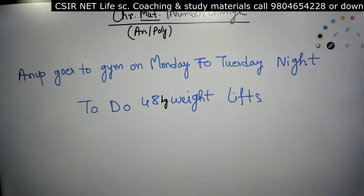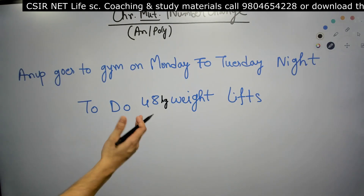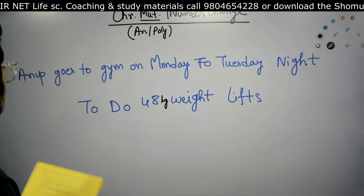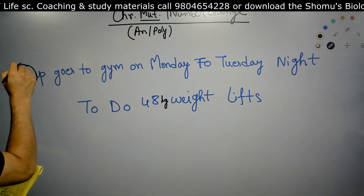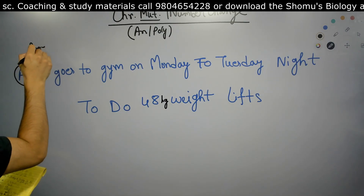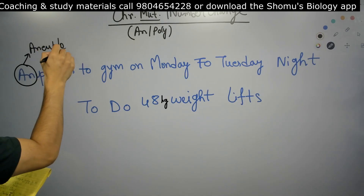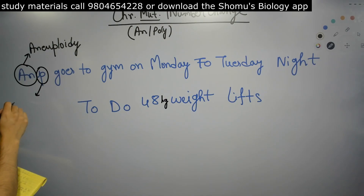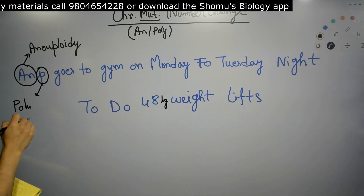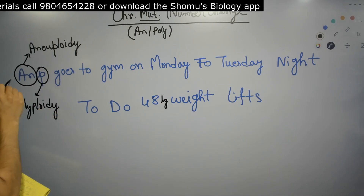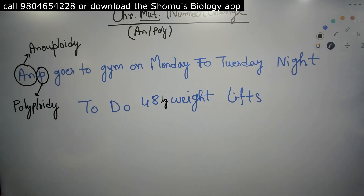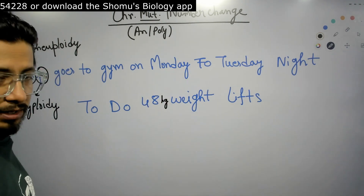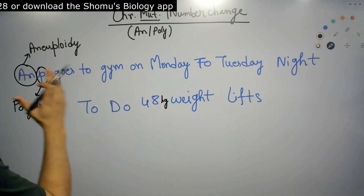Once it is clear in your head, I am going to tell you how to decipher this sentence to get all the information we want. Starting with 'Anup' — AN for aneuploidy, and the last P is for polyploidy. So we are discussing aneuploidy and polyploidy, which becomes clear in the very first word: Anup.